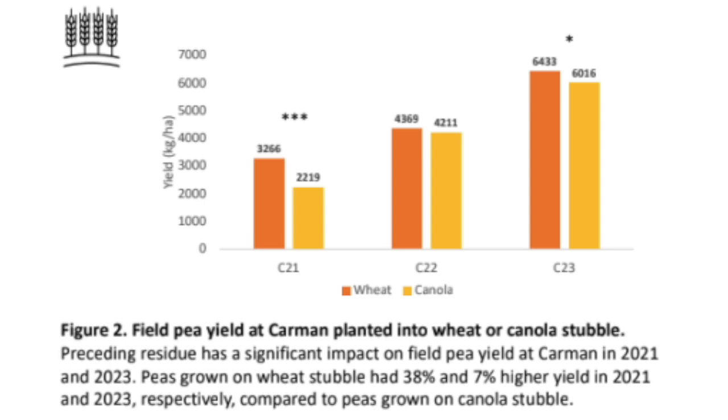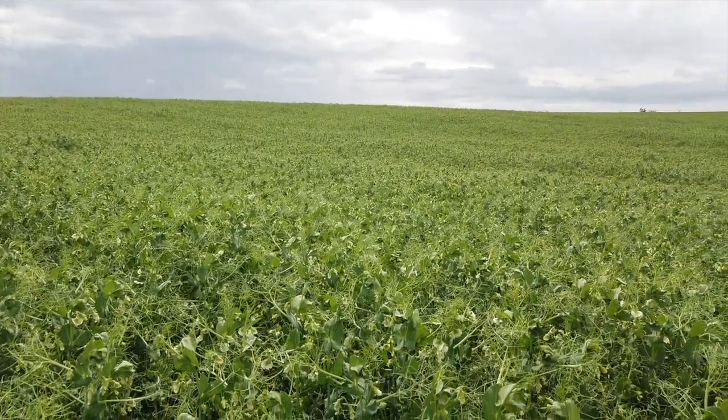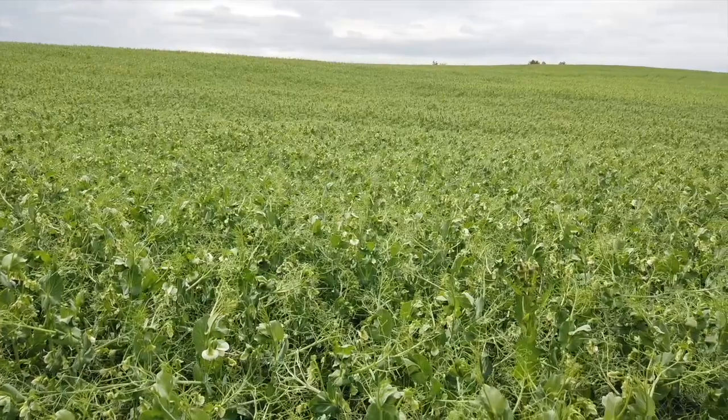Do you have any theory, or is there anything in the literature, as to why peas may fare better on wheat than on canola? So peas are a mycorrhizal crop, meaning that they have an association with mycorrhizae in the soil as a mechanism to increase phosphorus uptake to the plant roots. Wheat is also a host for mycorrhizae, while canola is a non-mycorrhizal crop. So the thought process is that peas grown on wheat stubble should out-yield peas grown on canola stubble because of that association and greater networking opportunity following wheat stubble.